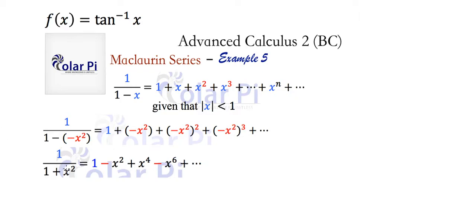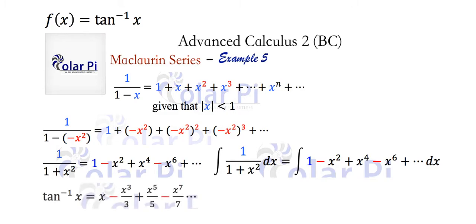So at this point, we have a Maclaurin series for 1 divided by 1 plus x squared, which is the derivative of tan inverse of x. So it's pretty clear how we're going to get to the Maclaurin series for tan inverse of x. We're going to take this very last equation and integrate both sides, and when we do, unsurprisingly, on the left side, we get tan inverse of x.